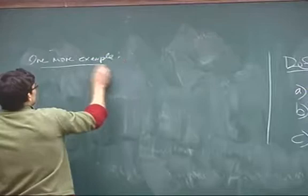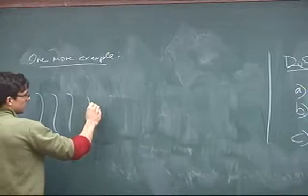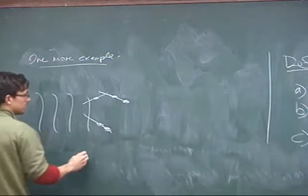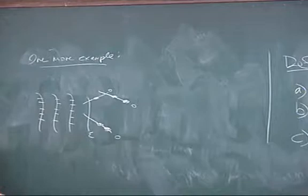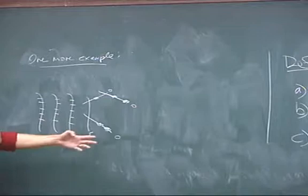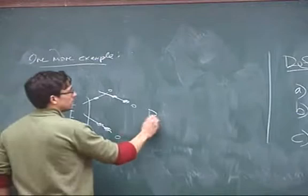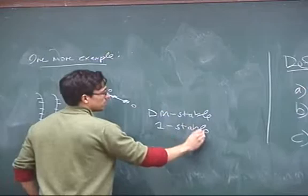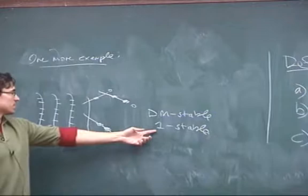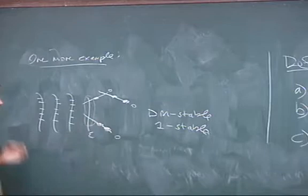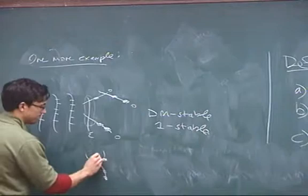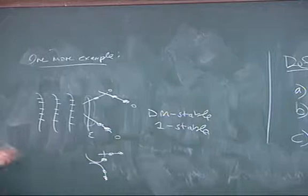Let me just do one more example: take a family of genus 1 curves with five marked points specializing to a curve where the elliptic curve component meets several genus 0 components. This is a family of five-pointed elliptic curves. As drawn, this is the Deligne-Mumford stable limit — it's also the 1-stable limit because there are no elliptic tails. Now suppose I want to take the 2-stable limit: I see an elliptic bridge, so I contract it.